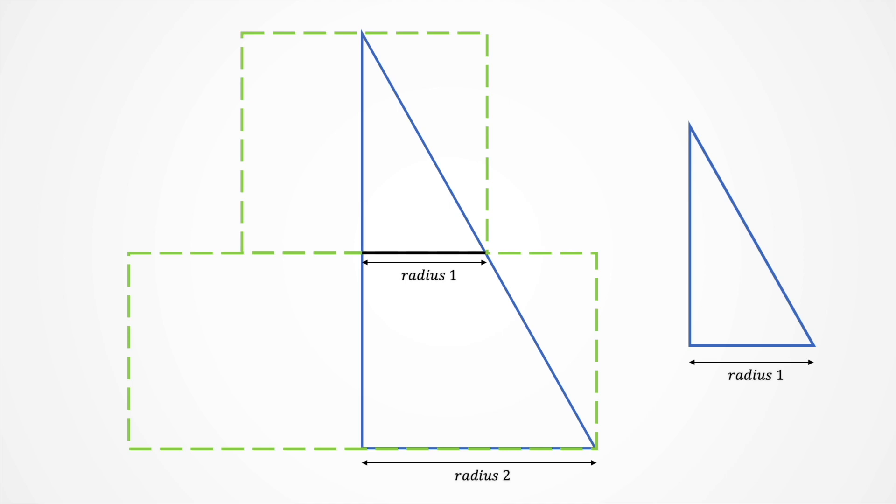And as long as we've halved the height of the original triangle, if the bigger base is r, then the smaller one is r half.